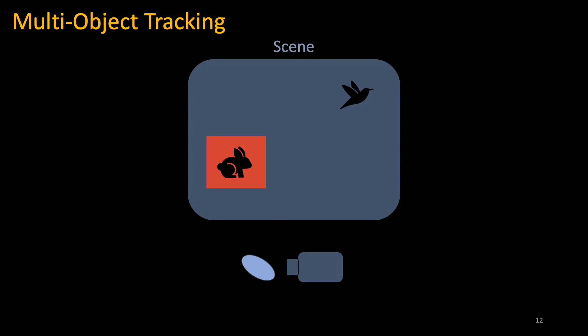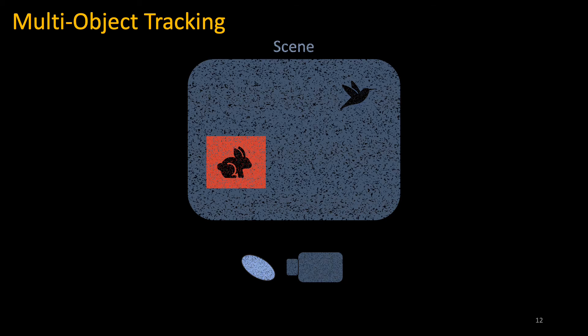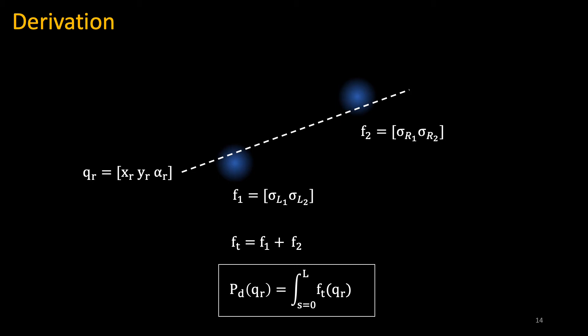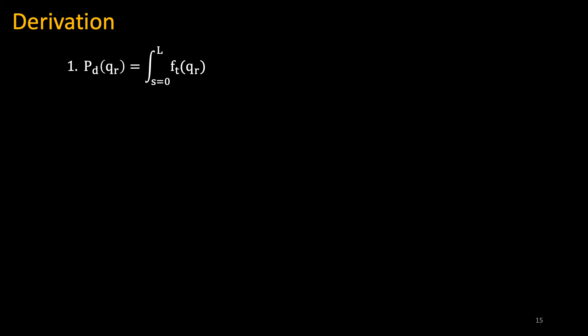Formally, let's model the bunny and bird as bivariate Gaussian distributions. QR is the current scan path the MEMS mirror takes between regions of interest. F1 and F2 are the centers of the respective bivariate Gaussians. UR is the control vector for how we update QR. We define FT as the accumulation of both bivariate Gaussians, and PD as the probability of detecting these bivariate Gaussians along the current MEMS mirror scan path. So PD is the probability of detecting a region of interest along the current scan path, and we would like to maximize this probability with respect to the control vector.